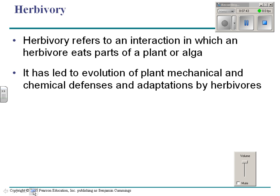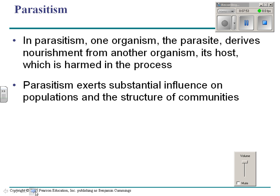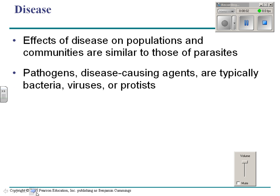Herbivory refers to an interaction in which an herbivore eats a plant or alga — we've talked about this before. Parasitism is when one organism, a parasite, gets nourishment from its host. The effect of disease on populations is similar to parasites, and we've talked about disease before.